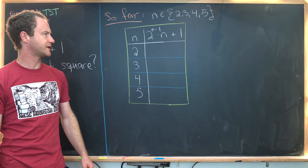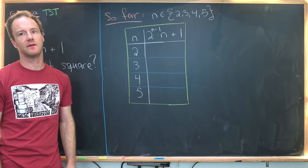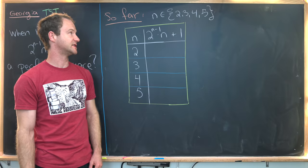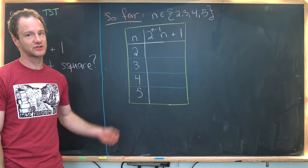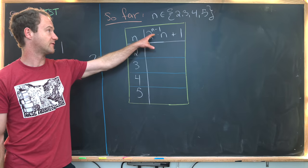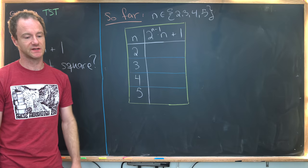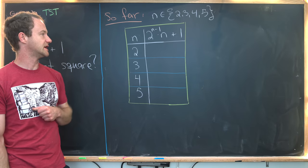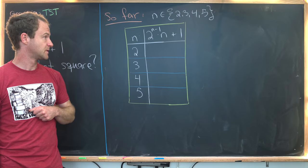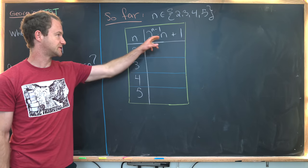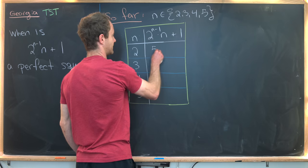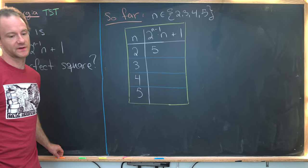So on the last board, we determined that the only values of n that could possibly make this happen are from the set {2, 3, 4, 5}. Now we're just going to calculate what we get for this expression in those cases. So if n equals 2, we have 2^(2-1) × (2+1), that's 2 × 3, which is 6. That's clearly not a perfect square.